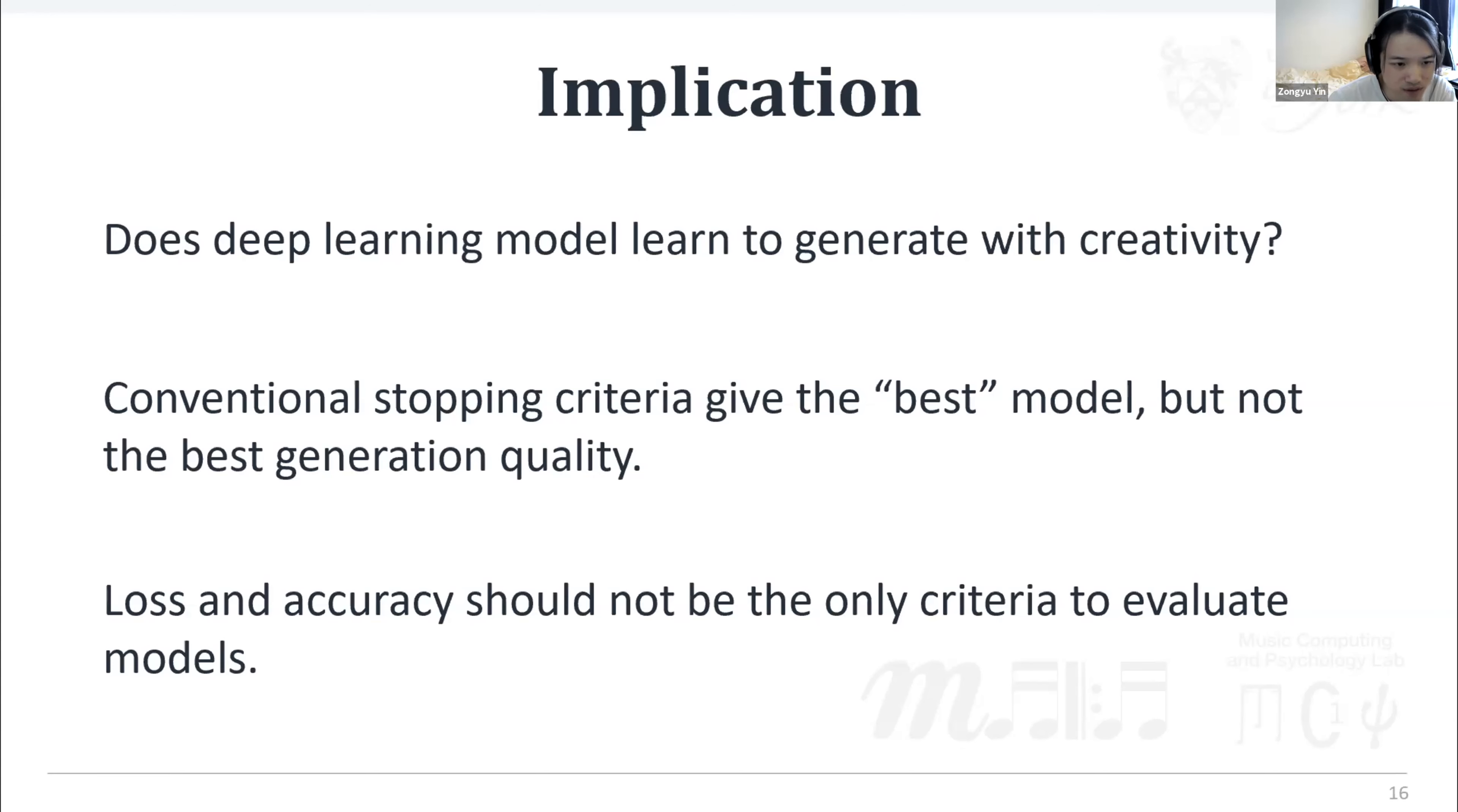So what do those phenomena imply? Deep learning model gradually copies increasingly distinctive chunks from pieces in a training set, calling into question whether it really learns to generate or whether it has been done by creative behavior. Using the conventional stopping criteria for the training process, the best model not only has a low level of originality, but also the quality of the generated excerpts is low in the sense that the same note is repeated most of the time.